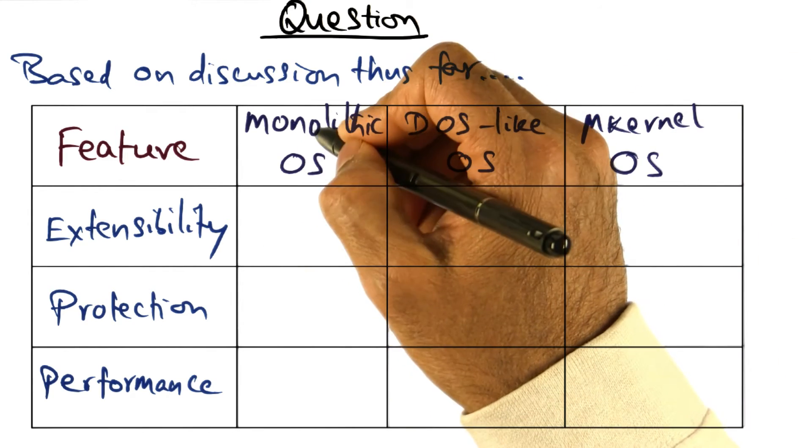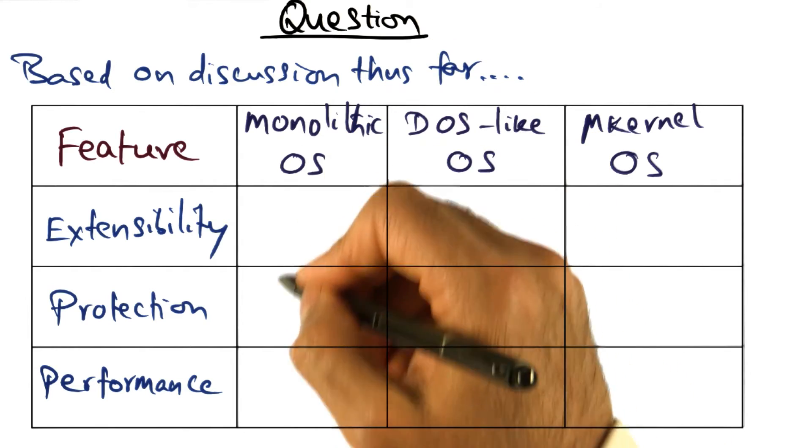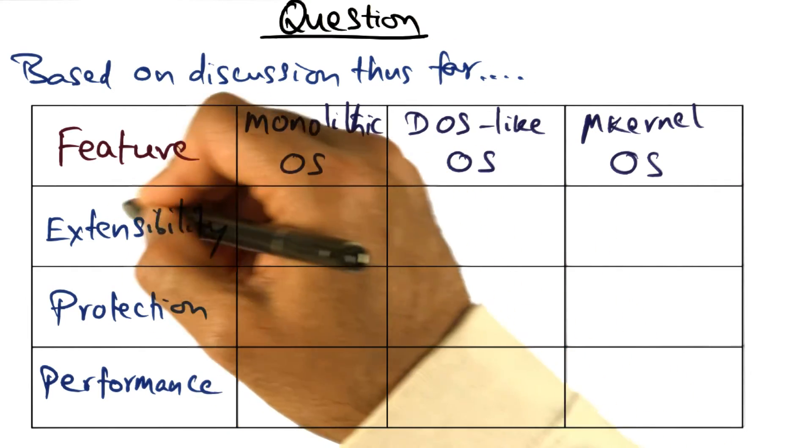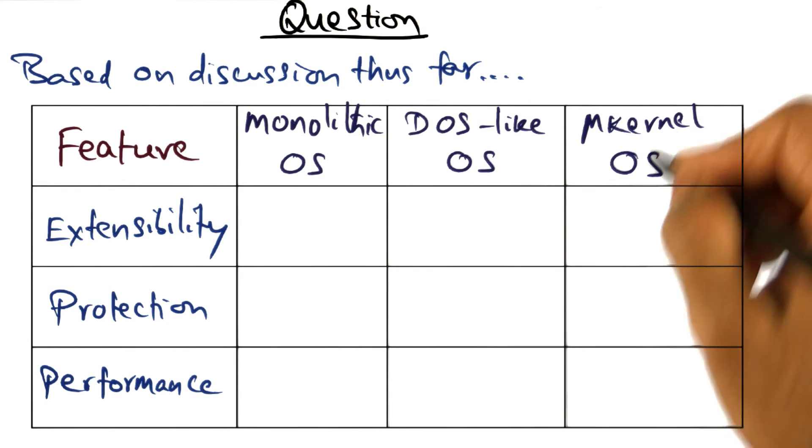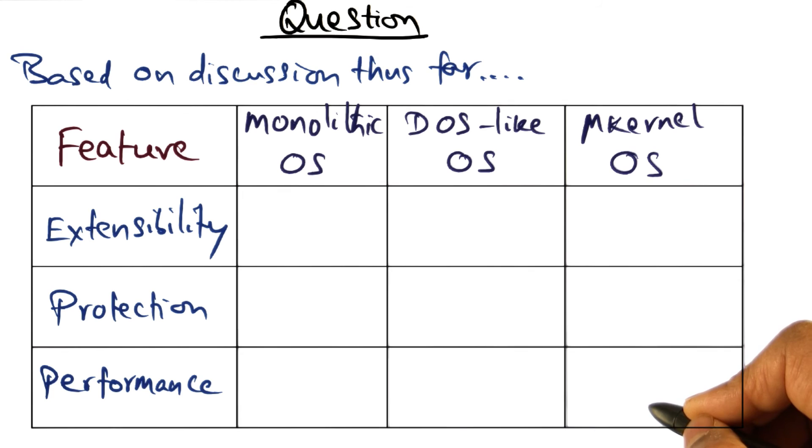So for each of these operating system structures, monolithic, think about whether it meets all of the features that I've identified here. Do the same thing for DOS like structure, do the same thing for the microkernel based structure.